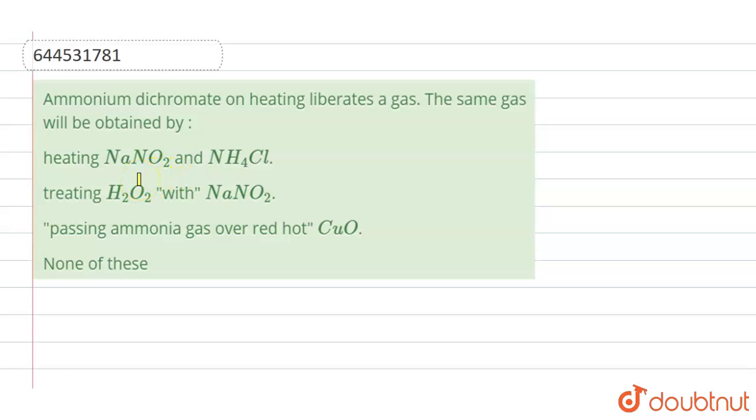So here the question is: ammonium dichromate on heating liberates a gas, the same gas will be obtained by - okay, so here we have four options. We have to see on heating which will have the liberation of the same gas, but first we need to see that when ammonium dichromate is heated which gas is liberated.